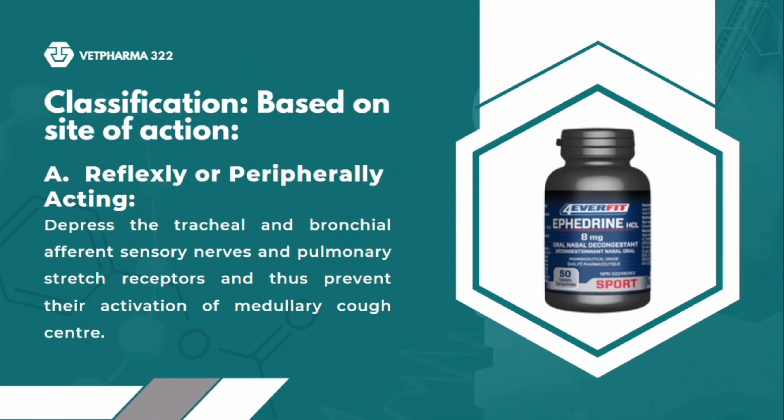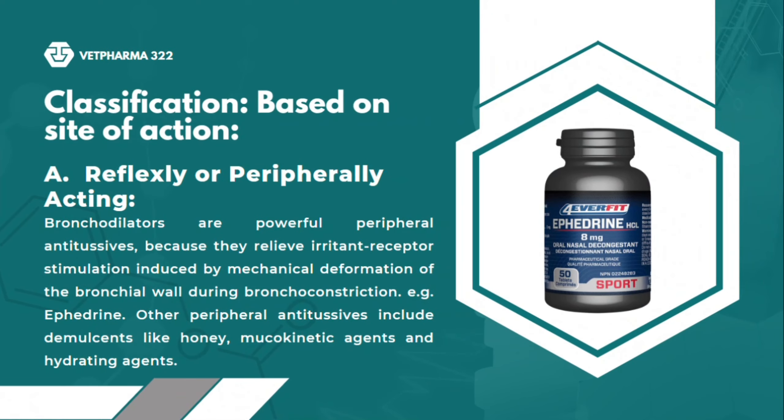One classification of antitussives based on site of action is the reflexly or peripherally acting antitussives. These depress the tracheal and bronchial afferent sensory nerves and pulmonary stretch receptors, thus preventing their activation of the medullary cough center. Bronchodilators are powerful peripheral antitussives because they relieve irritant receptor stimulation induced by mechanical deformation of the bronchial wall during bronchoconstriction. An example of this is ephedrine.